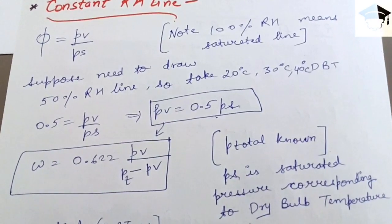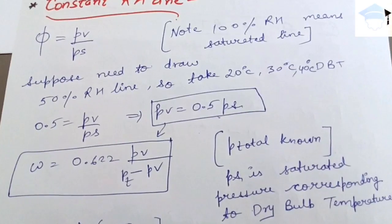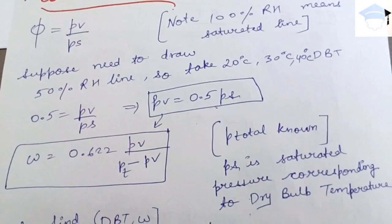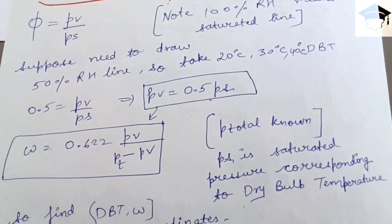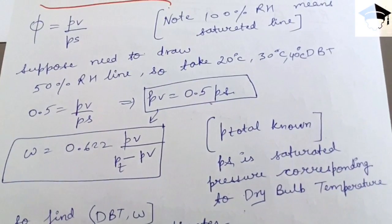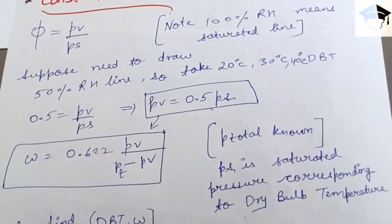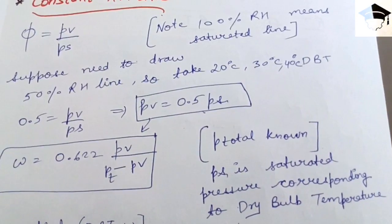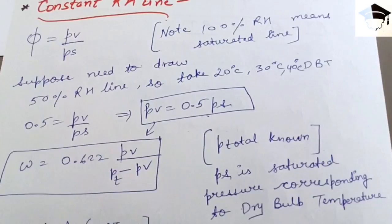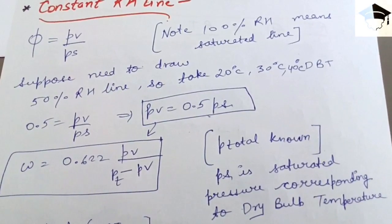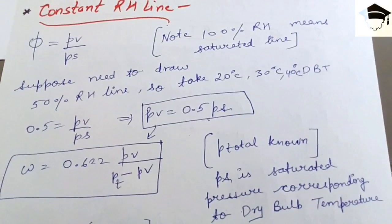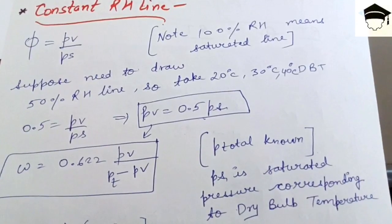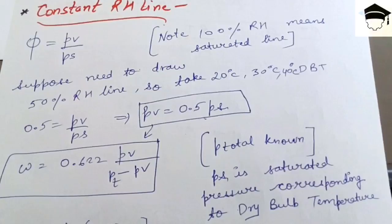PS is the saturated pressure corresponding to the dry bulb temperature taken — for example, 20°C, 30°C, or 40°C — found from the steam table. To plot a line you need at least two points, but taking three improves accuracy. Solve for each dry bulb temperature to find a point, then join all the points to get the constant RH line.